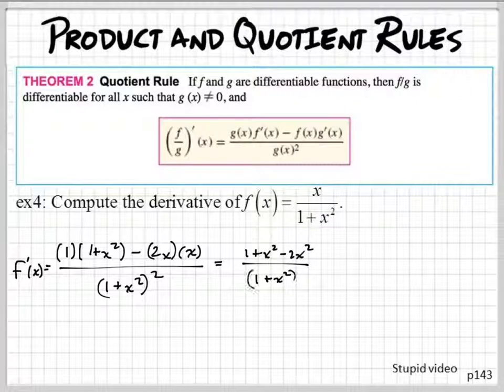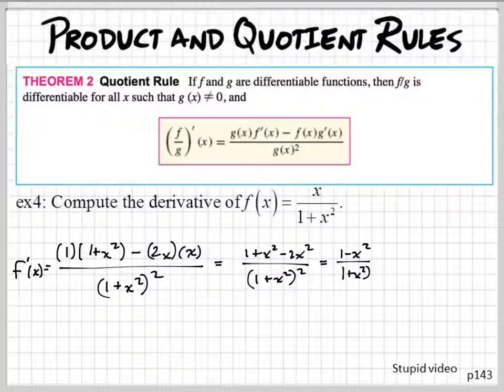We have that. Okay, can we simplify it anymore? Yeah, we have like terms right here. There's 1X squared and negative 2X squared, so we have 1 minus X squared divided by 1 plus X squared squared.